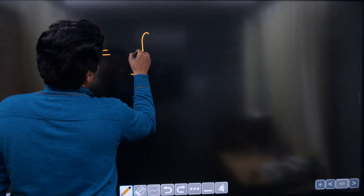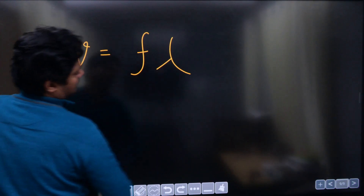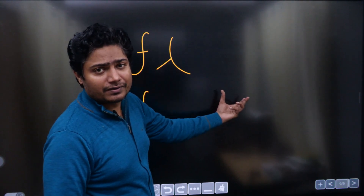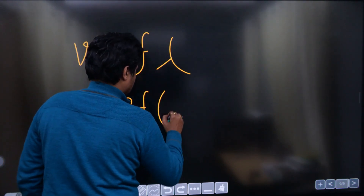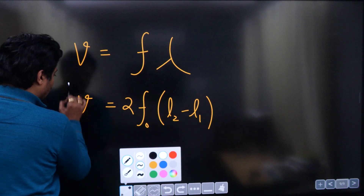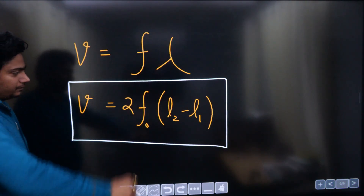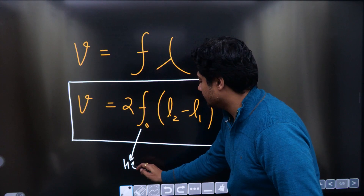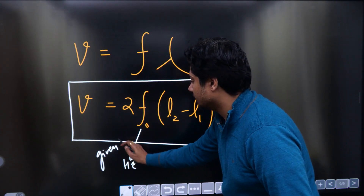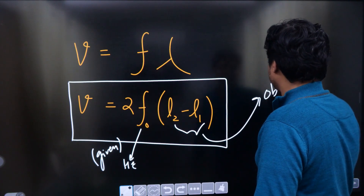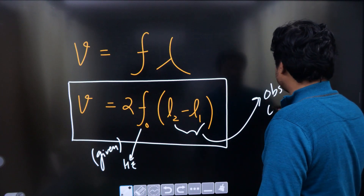From l₁ and l₂ you determine the wavelength λ. Now you have wavelength and frequency, so the speed is: v = frequency × wavelength. The frequency f₀ is known to you in hertz — it is the frequency of the tuning fork — and the wavelength you have observed as 2(l₂ − l₁), where the resonances were observed. This is how you determine the speed of sound.